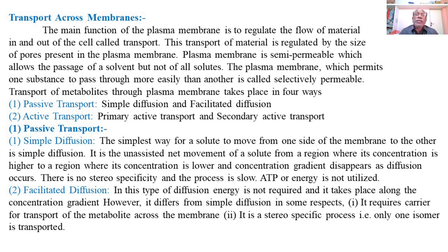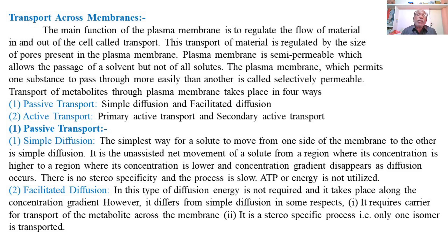Transport of metabolites or various biological compounds through the plasma membrane takes place by four different types, which can be divided into passive transport or active transport. Passive transport includes simple diffusion and facilitated diffusion. In simple diffusion, transport of biomolecules occurs freely through the plasma membrane via pores of different sizes present in the plasma membrane.